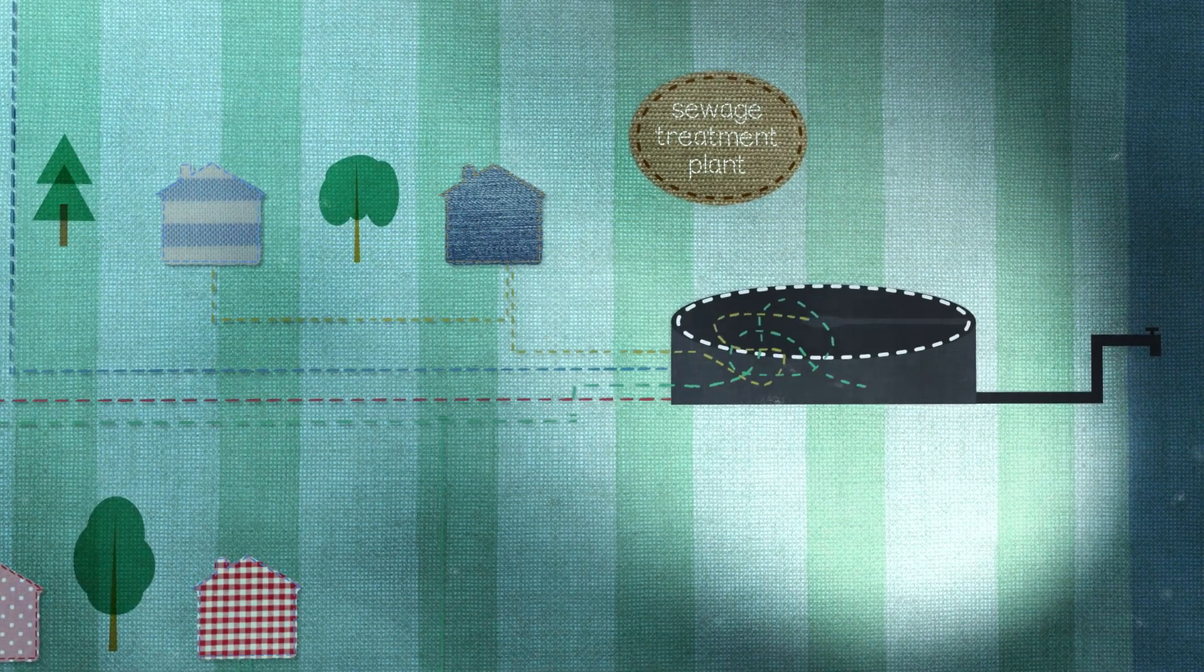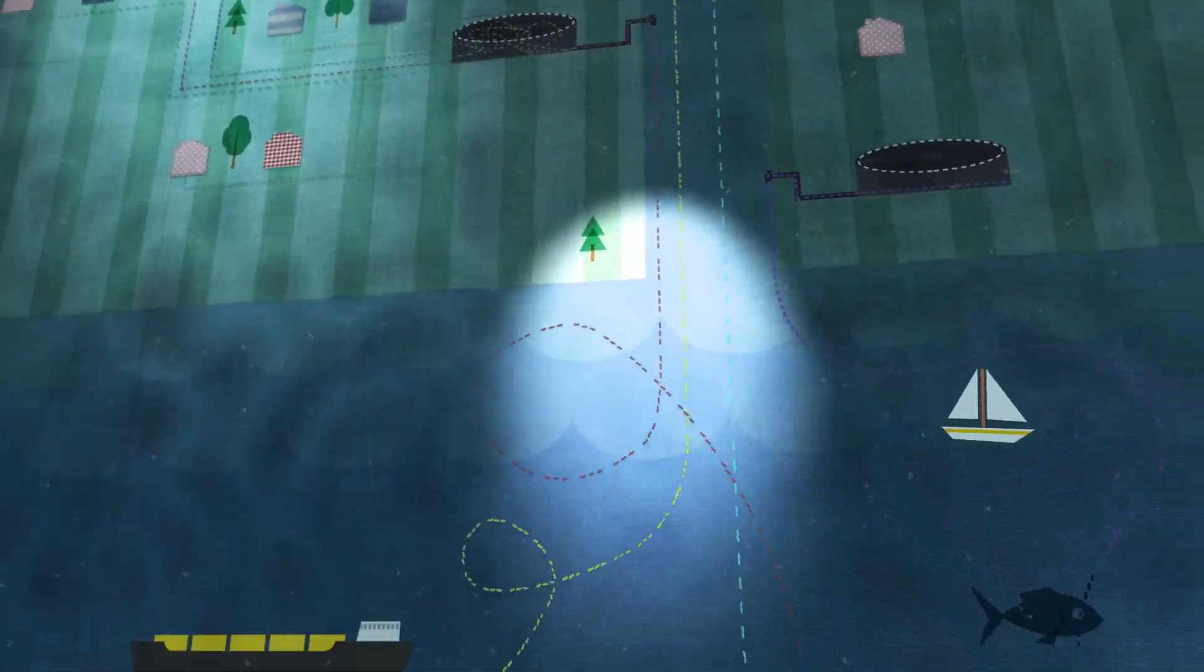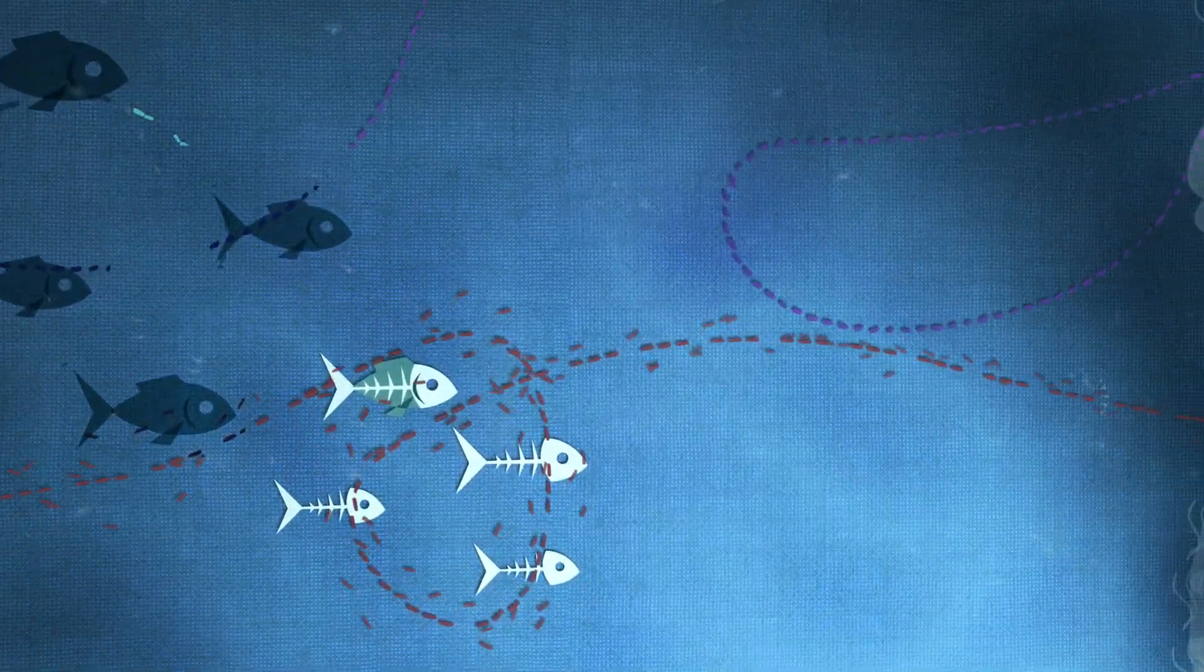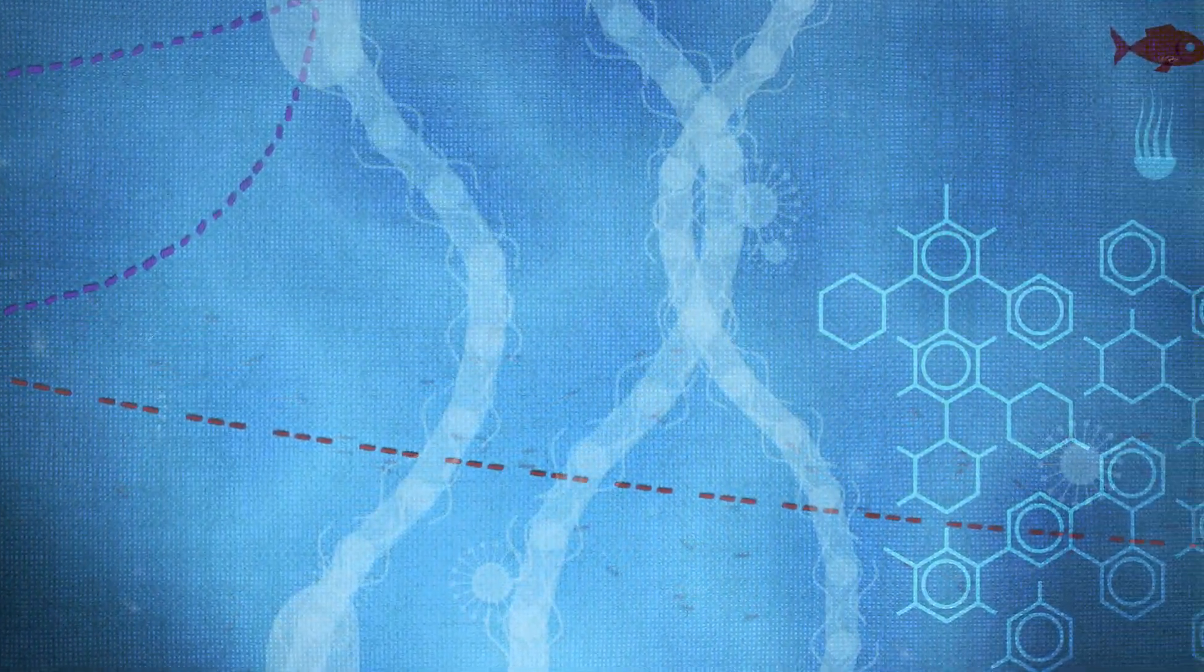Sewage treatment plants don't effectively filter out these microfibers. Once in the environment, these fibers reduce to even smaller pieces and accumulate toxic chemicals such as bisphenol A.